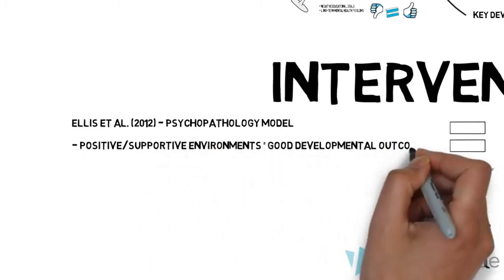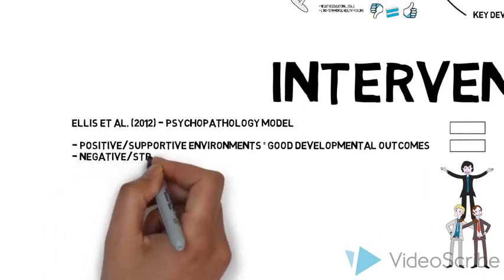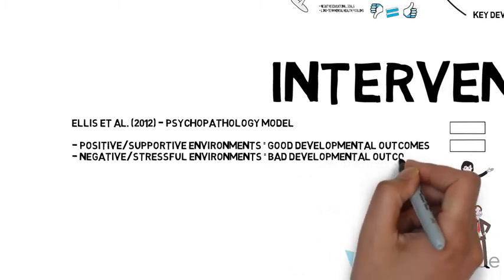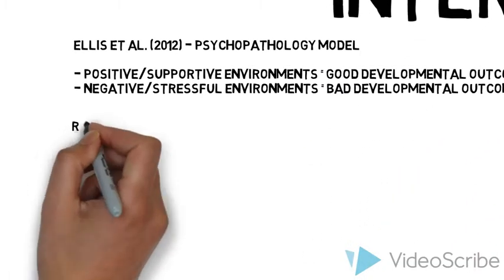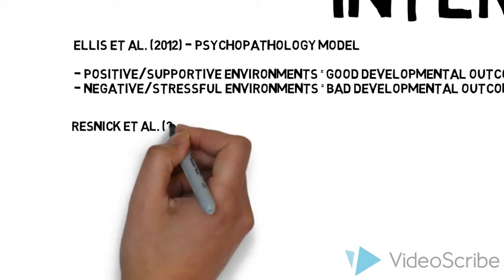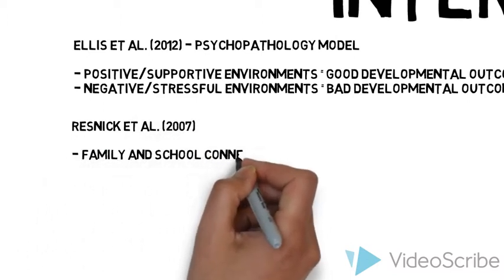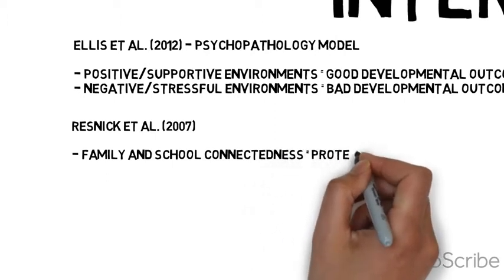Whereas negative or stressful environments foster bad developmental outcomes: depression, substance use and school failure. This is supported by Resnick and others who also found that family connectedness and school connectedness were protective forces against a range of health risk behaviours in adolescents.